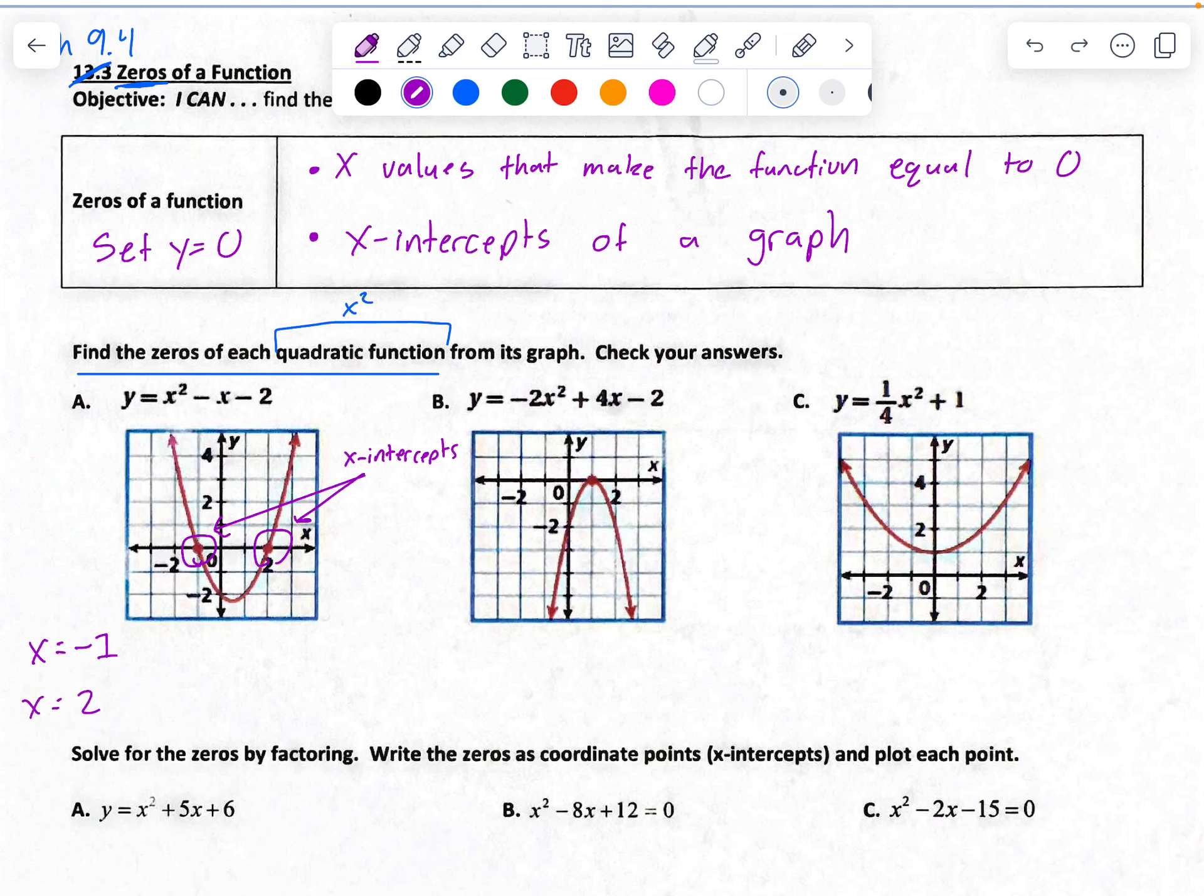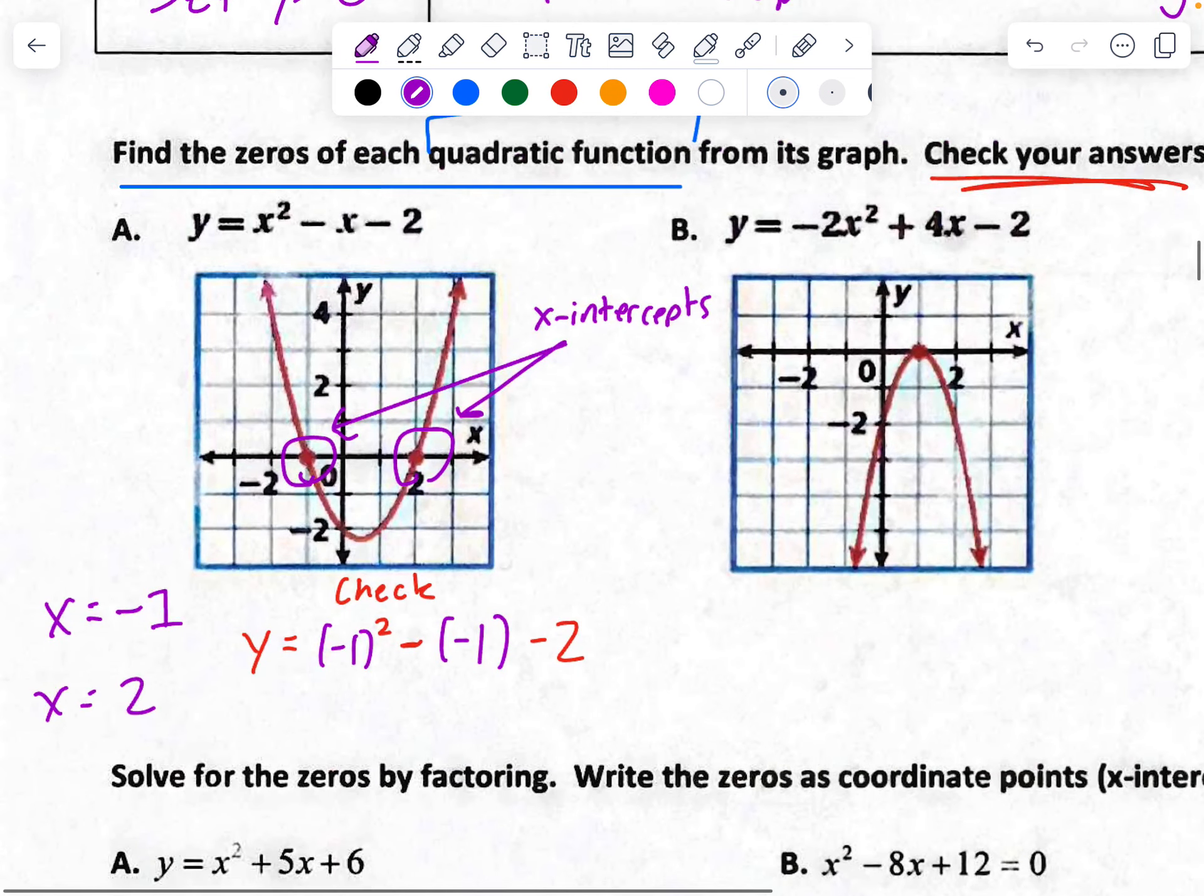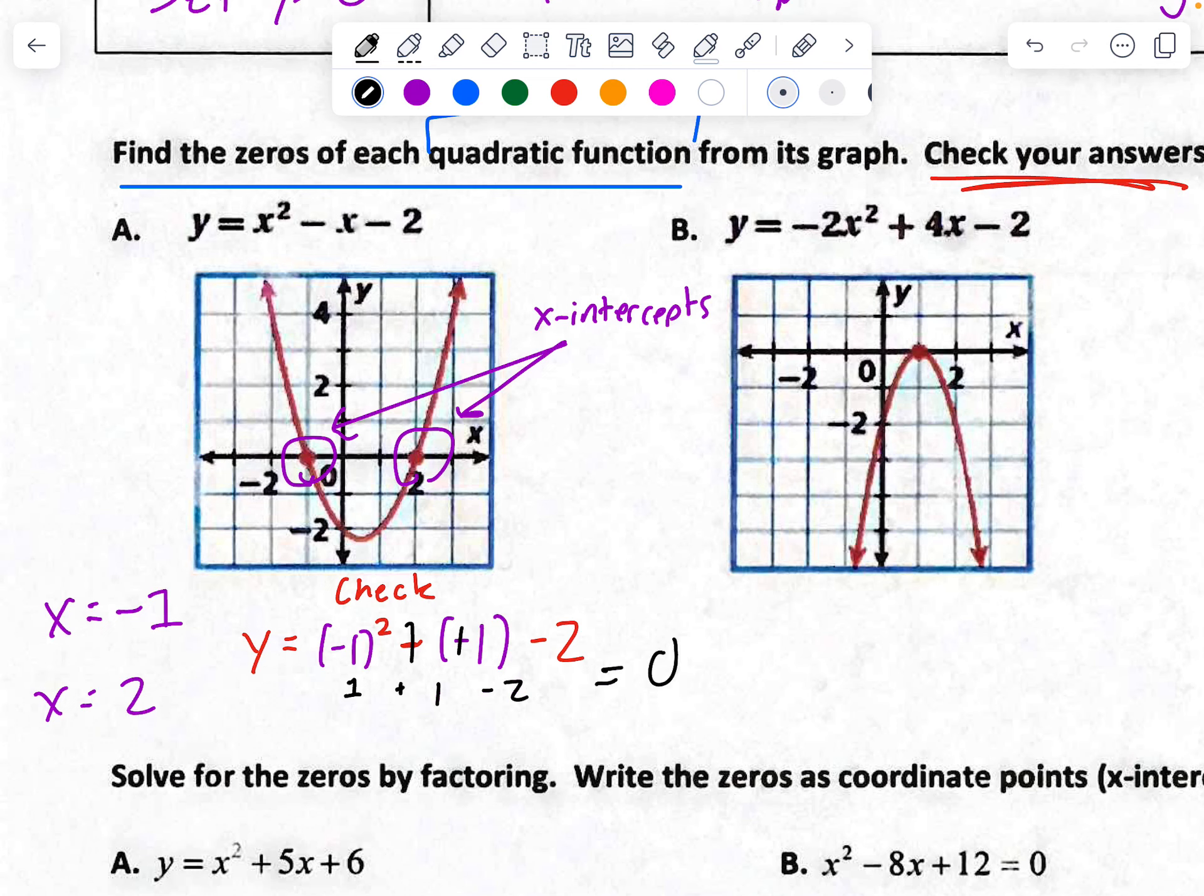So now, that was easy. But now we also want to check. Let's make sure we check your answers here. So we're going to check our answers by plugging it back in. And we should get 0. Let's take a look here. So I'm going to have y equals negative 1 squared minus negative 1 minus 2. So let's remember to flip the signs here. Negative 1 squared is just positive 1. So positive 1 plus 1 minus 2. That should equal 0.